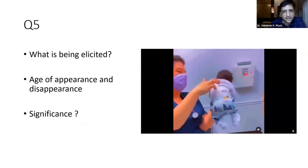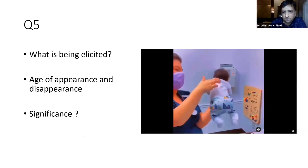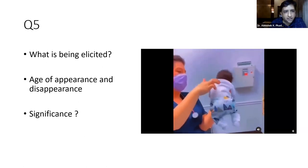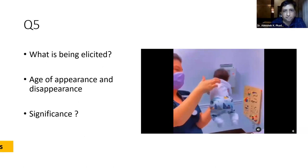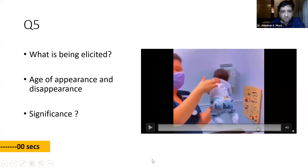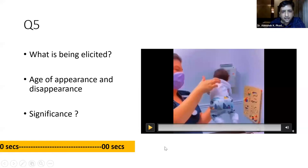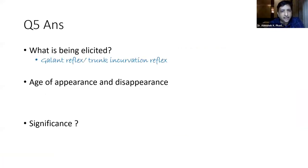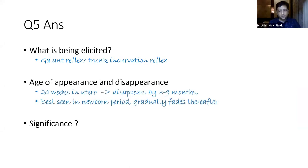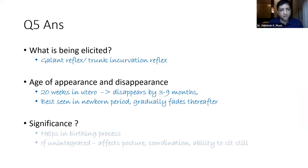Question 5: What is being elicited here — can you see the video? Give the age of appearance and disappearance and the significance. It is the Gallant reflex, or trunk incurvation reflex. Age of appearance is 20 weeks in utero and it disappears by three to nine months of life, best seen in the newborn period. It helps in the birthing process, and if unintegrated, it affects posture, coordination, and the ability to sit still. Fellows need to be familiar with all neonatal reflexes.